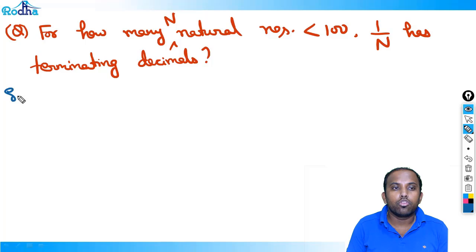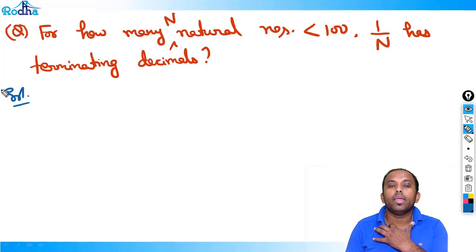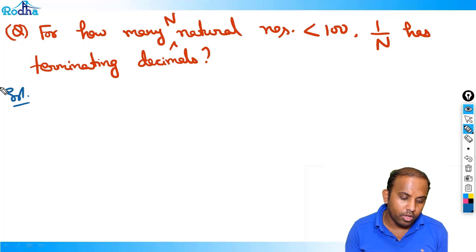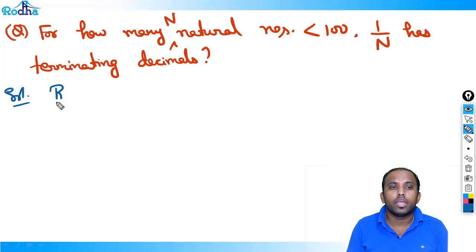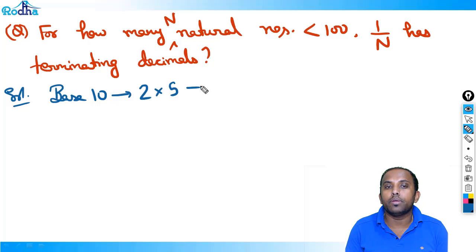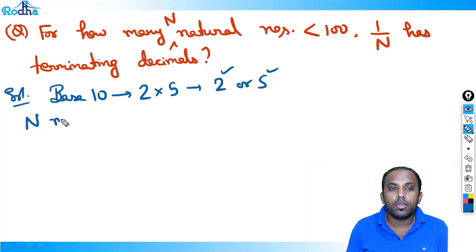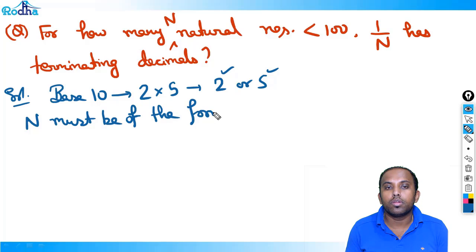To solve this, use the previous concept: 1/n has terminating decimals if n contains primes included in the base. Since nothing is given, base is 10. Base 10 = 2×5. So whichever number contains 2 or 5 or any power of 2 or 5 will have terminating decimals. That means n must be of the form 2^a × 5^b.